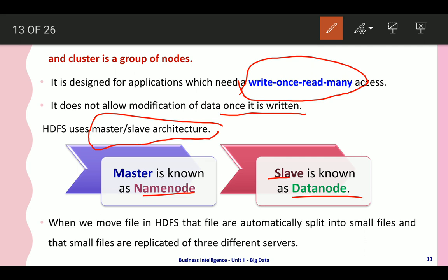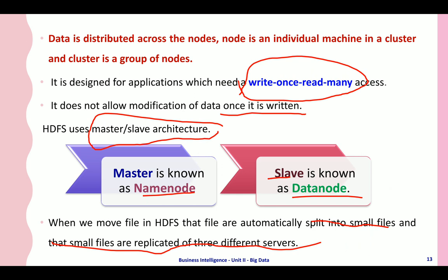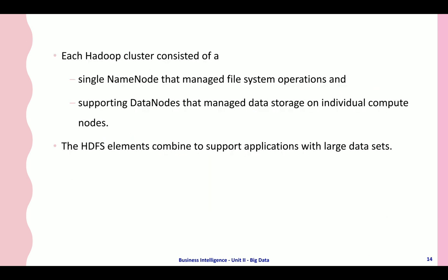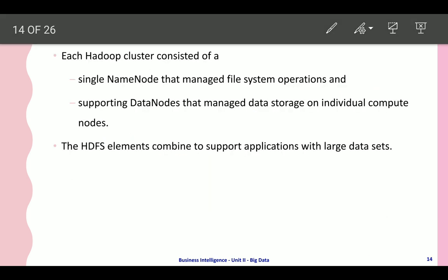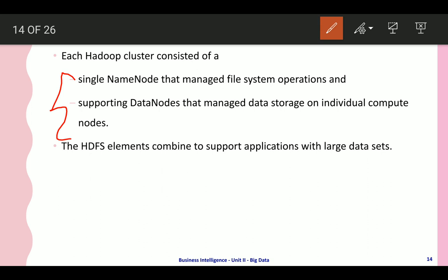When a file is moved into HDFS, it is automatically split into small blocks and those blocks are replicated to three different servers. Each Hadoop cluster consists of a single name node that manages file system operations and supporting data nodes that manage data storage on individual compute nodes.